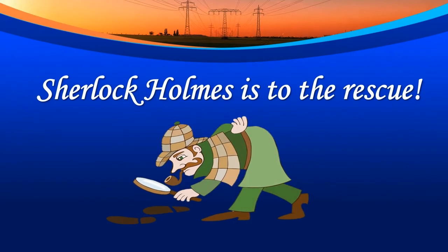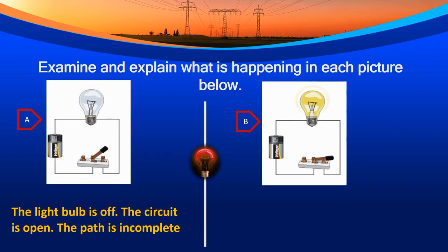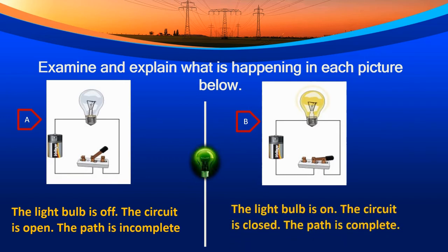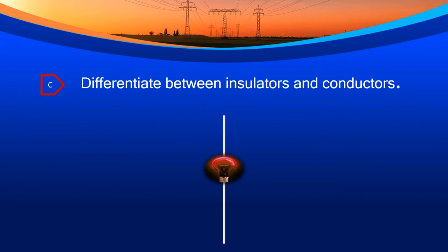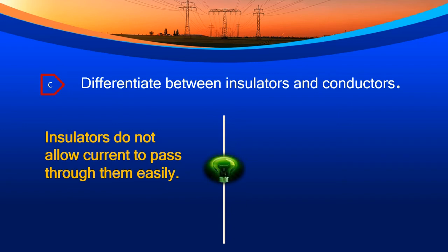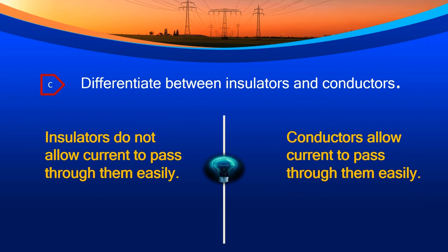Sherlock Holmes is to the rescue. Examine and explain what is happening in each picture. Picture A: the light bulb is off, the circuit is open, and the path is incomplete. You are correct. Picture B: the light bulb is on, the circuit is closed, and the path is complete. You are correct. Now differentiate between insulators and conductors. Insulators do not allow current to pass through them easily. Conductors allow current to pass through them easily. Very good.